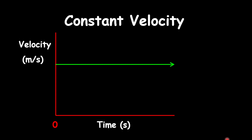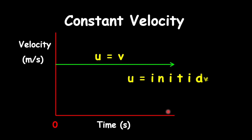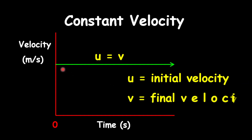What this means is that whatever the velocity is at the start of this line is the velocity at the end of this line. We can represent some quantities here: u equals v, which means the initial and the final speed or velocity will be the same. U represents initial velocity — the starting velocity. The start of this line and the end of the line, which is the final velocity, is the same. Along the entire line, the velocity is the same.